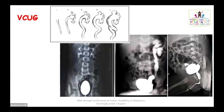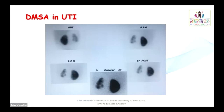The next imaging is voiding cystourethrogram (VCUG), which is the gold standard to find out bladder anomalies like posterior urethral valve and vesico-ureteric reflux. After VCUG, reflux is graded from stage 1 to stage 5. Bilateral vesico-ureteric reflux grade 2, grade 4–5, and posterior urethral valve with bladder diverticulum can be identified. Though PUV children present with poor urinary stream, many times PUV is found during UTI evaluation.